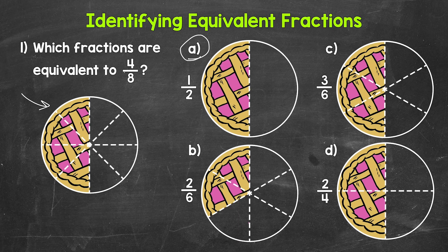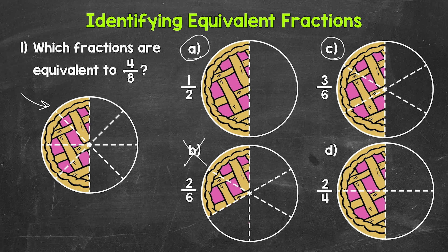Let's move on to choice B, where we have 2 sixths. Is 2 sixths equivalent? No, this is less than 4 eighths — we do not have the same amount here, so this is not equivalent. Moving on to choice C, 3 sixths. Is this equivalent? Yes, we have the same amount of pie left. These fractions represent the same part of the whole pie. 4 eighths and 3 sixths are equivalent fractions. And lastly, D, we have 2 fourths. This is the same amount as well, so 2 fourths is an equivalent fraction.